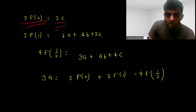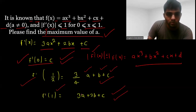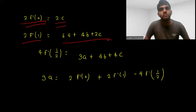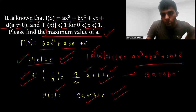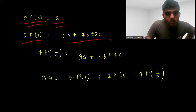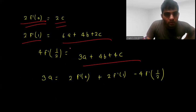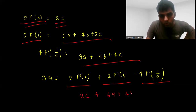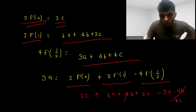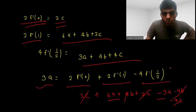2·f'(0) = 2c. And 2·f'(1) = 6a + 4b + 2c. And 4·f'(1/2) = 3a + 4b + 4c. Now if you compute 2·f'(0) + 2·f'(1) − 4·f'(1/2), that gives 2c + 6a + 4b + 2c − 3a − 4b − 4c, and after cancellation only 3a is remaining. So this equals 3a.